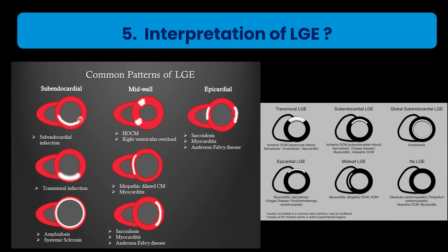For LGE interpretation — remember just a few key patterns: subendocardial or transmural enhancement is ischemic in nature. Global enhancement suggests amyloidosis or systemic sclerosis. Mid-wall enhancement at the RV-septal attachment is HOCM. Remaining cardiomyopathies and myocarditis show typical mid-wall septal enhancement. Sarcoidosis and myocarditis can have mid-wall or epicardial involvement. Anderson-Fabry disease can also show mid-wall or epicardial patterns.